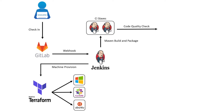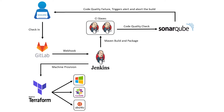In the next stage, Jenkins uses the SonarCube scanner plugin for continuous inspection of code quality, to perform automatic reviews for static analysis of code to detect bugs, code smells, and security vulnerabilities. SonarCube offers reports on duplicated code, coding standards, unit tests, code coverage, code complexity, comments, bugs, etc. When the code doesn't meet the quality standards, an alert mail is triggered to the development team and the pipeline will be aborted. Once the code meets the quality standards, the archived Node.js application package will be pushed to the JFrog Artifactory repository.